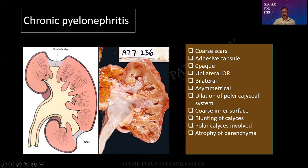Third, inflammation is chronic. And therefore, there will be a fibrinous exudate. And therefore, there can be adhesion of the capsule. And secondly, any such exudate will lead to opacity of the clear capsule. Therefore, it does not transilluminate.